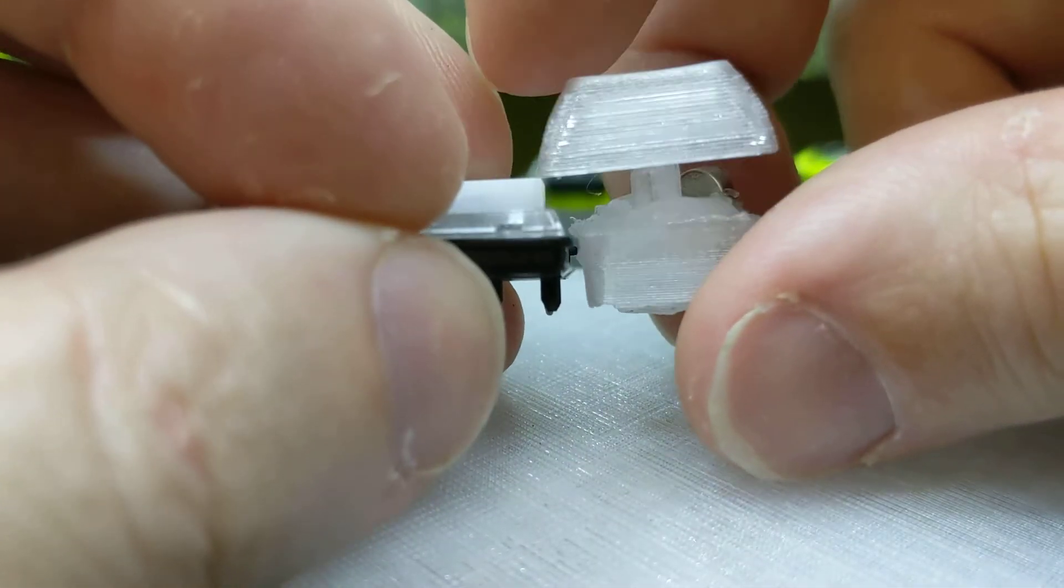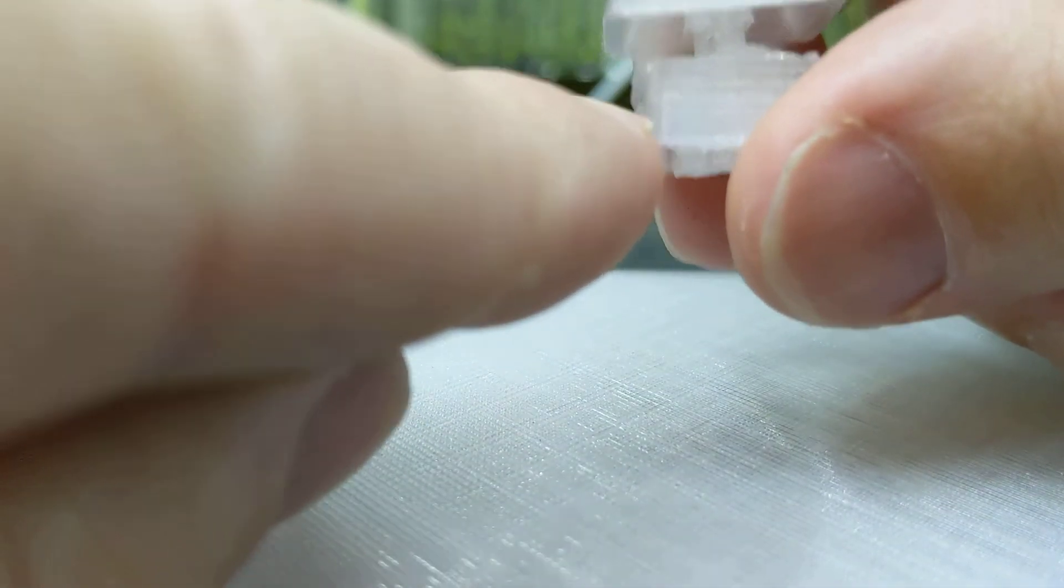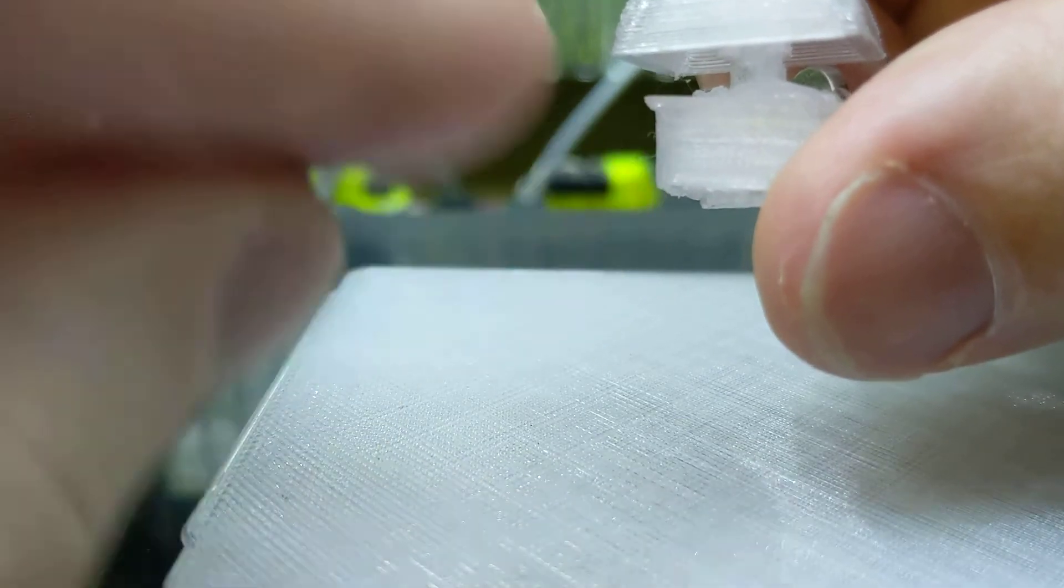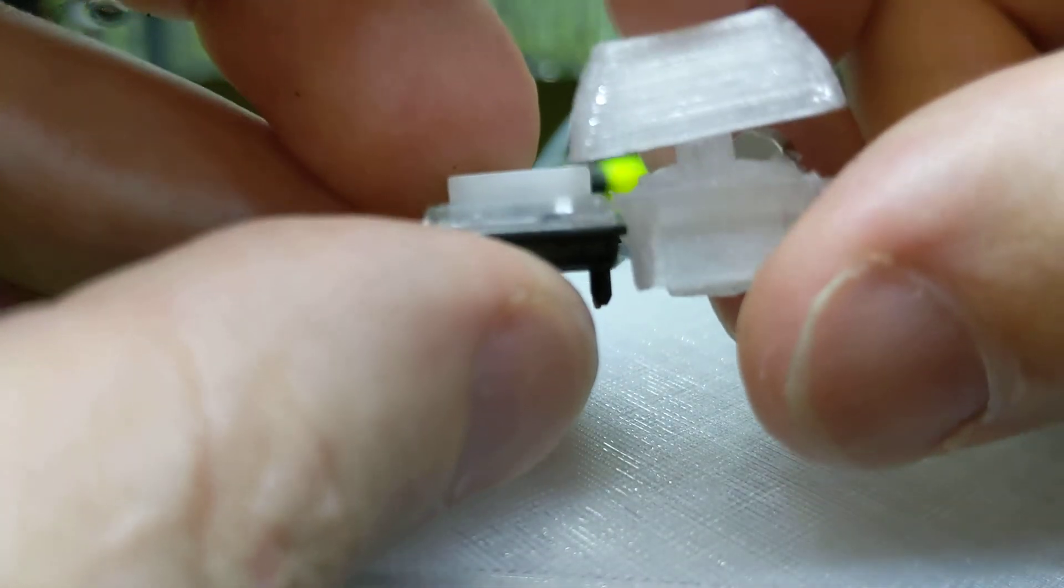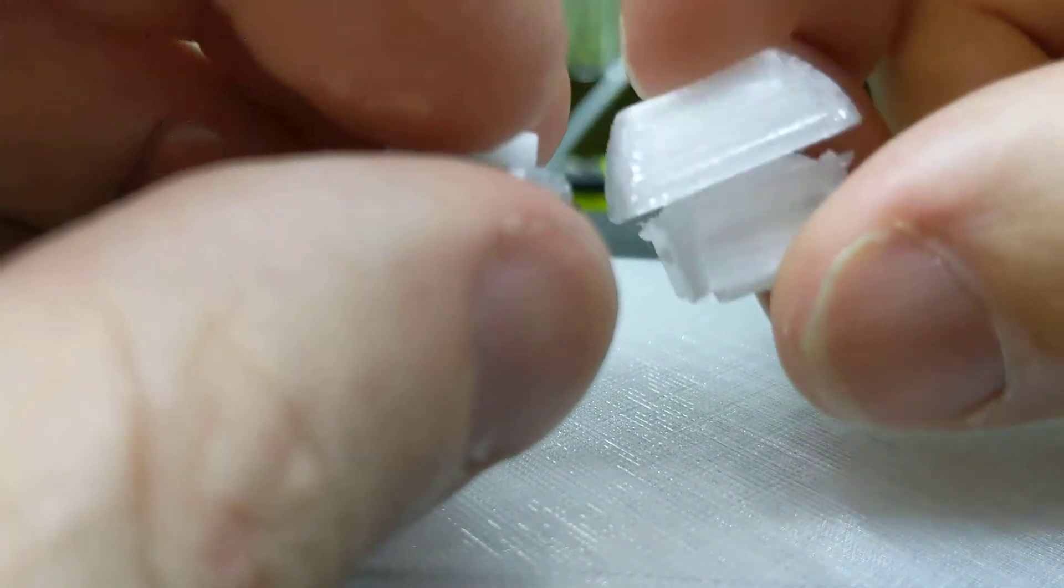Because whatever the distance is here is just going to get cut off. That's the only difference. So if I cut off like a millimeter and a half here, it'll be just a little bit longer than the Kailh Choc. But it'd be a pretty effective low profile switch.